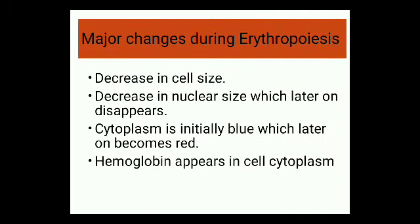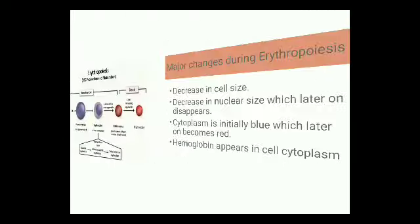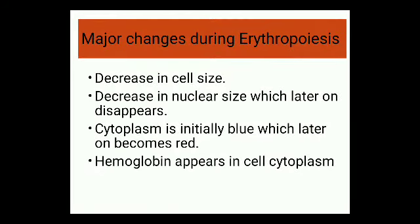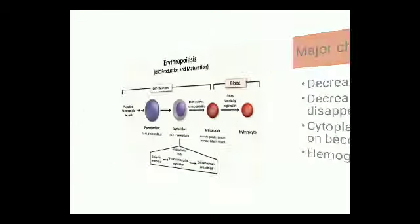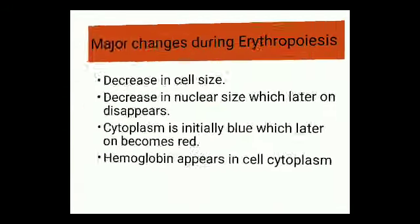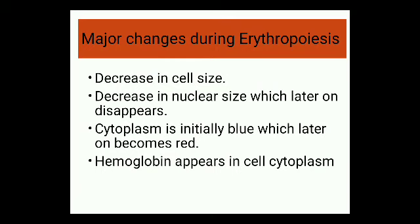The major changes during erythropoiesis are: decrease in cell size, decrease in nuclear size (which later disappears), and change in cytoplasm color — cytoplasm is initially blue and later becomes red. Hemoglobin appears in the cell cytoplasm during maturation.